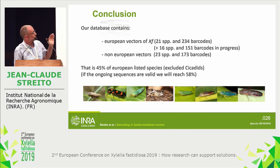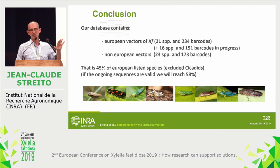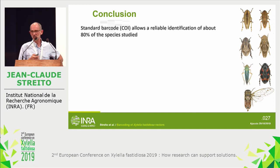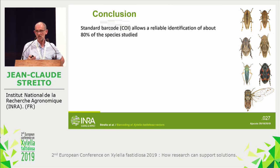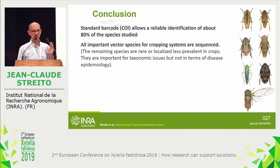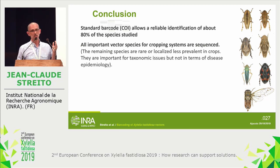In conclusion, we succeeded in sequencing about 40% of European putative vectors of Xylella, excluding Cicadidae. If we include ongoing sequences, we will reach about 60%. Standard barcode is a good marker to identify Xylella vectors — about 80% of species tested are reliably identified with this marker. The main vectors present in cropping systems are already sequenced without any problem, so this gene can be used routinely for at least the northern part of Europe.